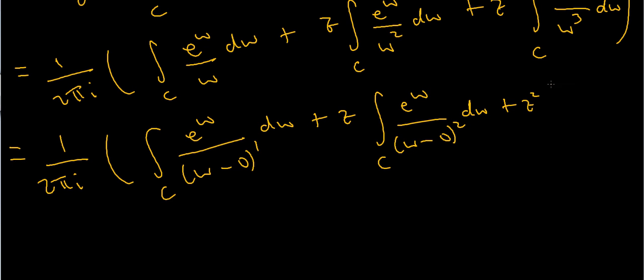plus z squared times the integral over C of e to the w over w minus 0 cubed, dw. These two expressions are exactly the same thing, because w minus 0 squared is just the same thing as w squared.